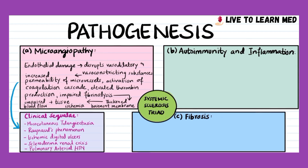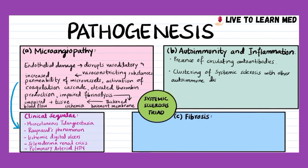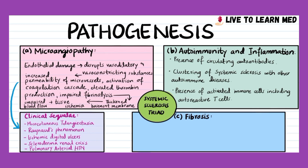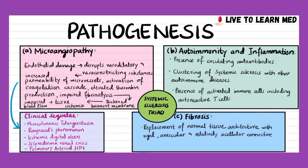A number of observations support the inflammatory or autoimmune nature of systemic sclerosis, including presence of circulating autoantibodies, clustering of systemic sclerosis with other autoimmune diseases, and the presence of activated immune cells including autoreactive T-cells. Fibrosis in systemic sclerosis is caused by replacement of normal tissue architecture with rigid, avascular, and relatively acellular connective tissue.